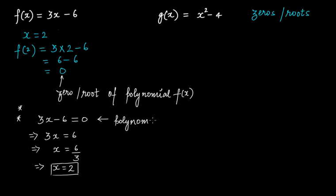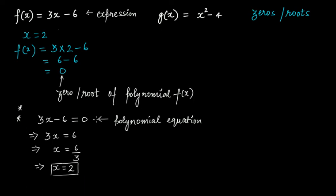When we simply say 'polynomial,' it is actually an expression — an algebraic expression. But when you equate it to something, like equal to 0, it becomes an equation. You now have two sides: a left-hand side and a right-hand side, so it's not a polynomial or algebraic expression anymore — it's now a polynomial equation. When we say fx equal to 0, this polynomial equation holds true when the left-hand side equals the right-hand side.